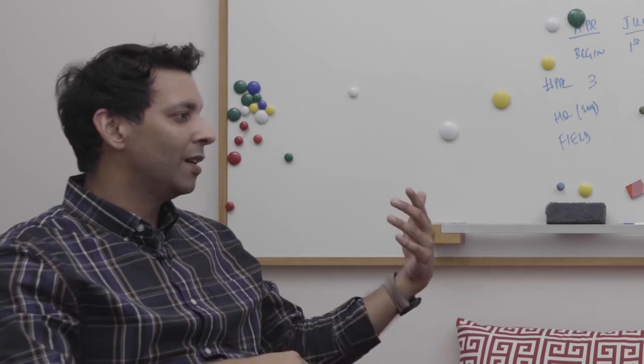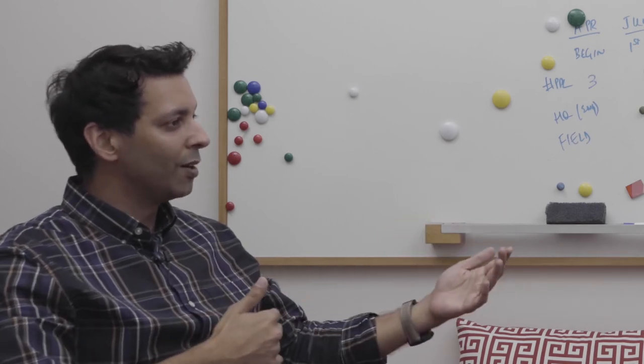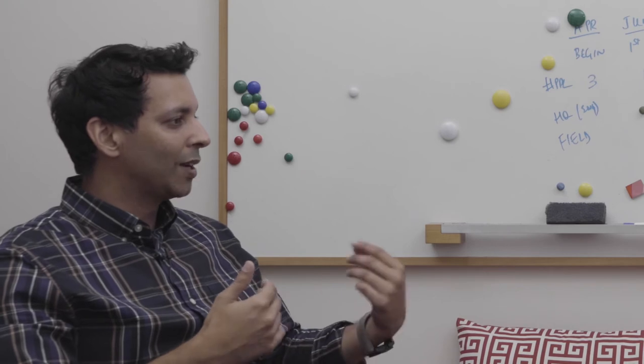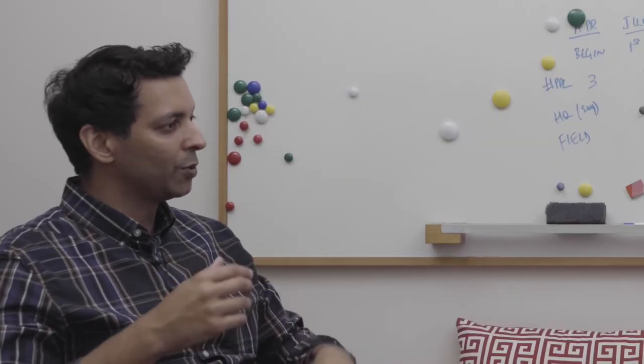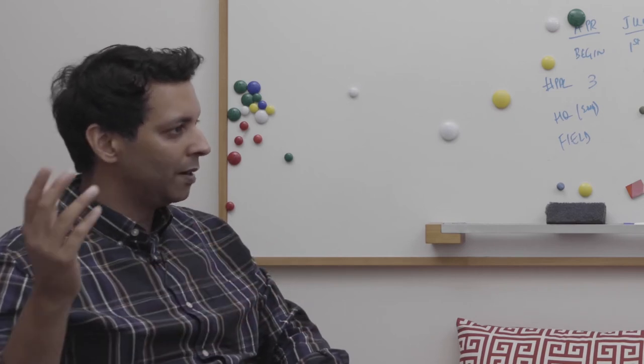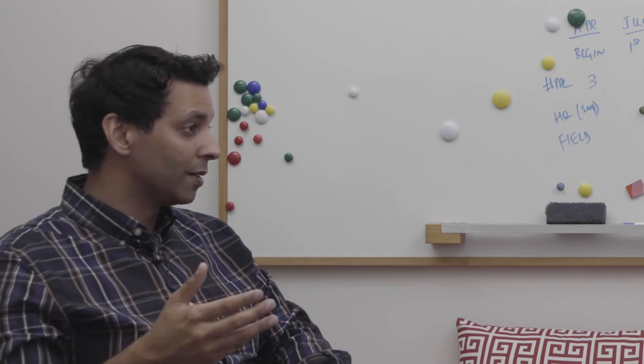And so essentially you've created a double-blind introduction model whereby you're getting matched on mutual interests. The match happens when two people show mutual interests.